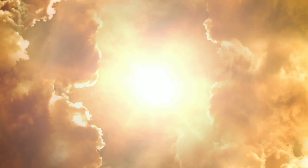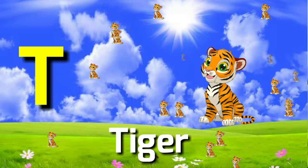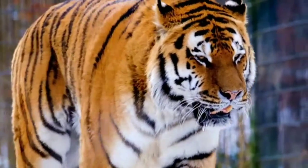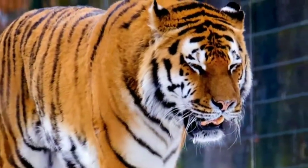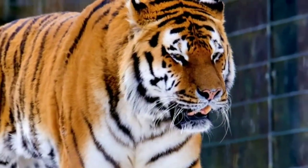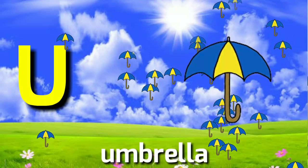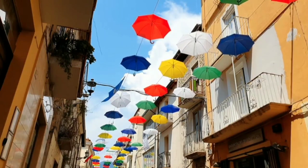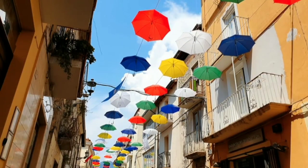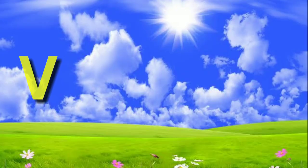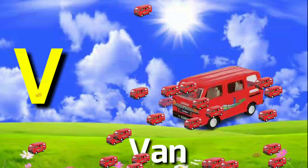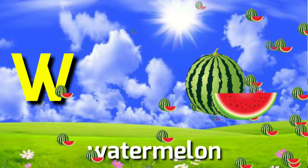T for tiger. U for umbrella. V for violin. W for watermelon.